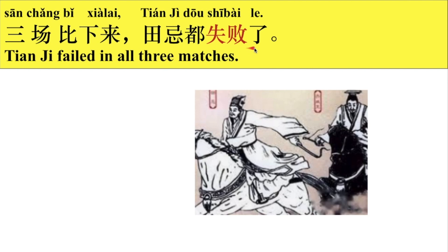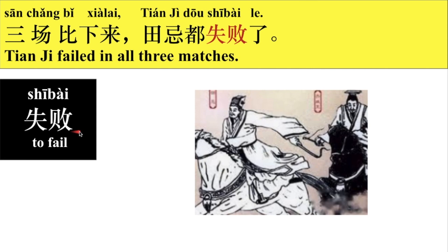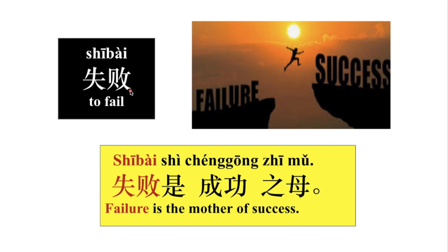三场比赛，比下来就是比赛完了以后，那么田纪都失败了。失败，我们来看一个例子：失败是成功之母。好，那这个之就是的的意思，母就是母亲、妈妈。好，三场比下来，田纪都失败了。